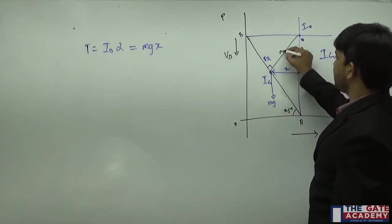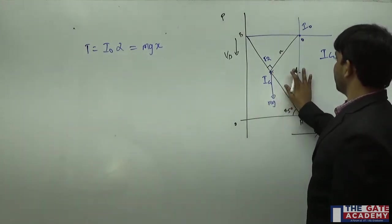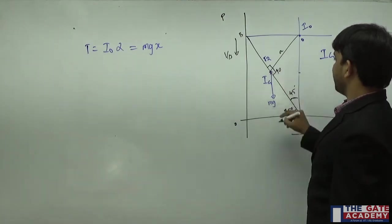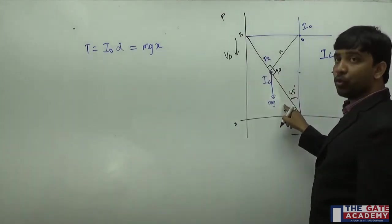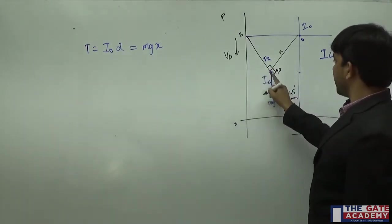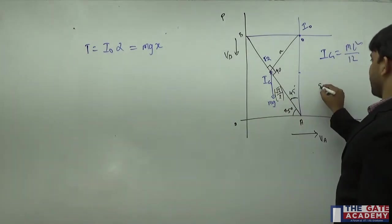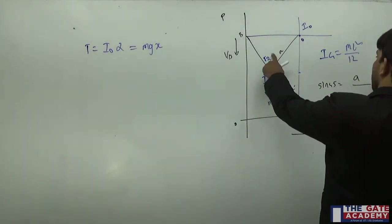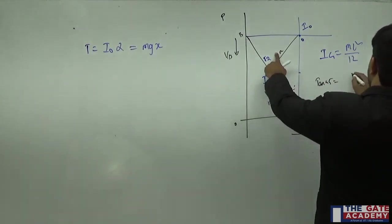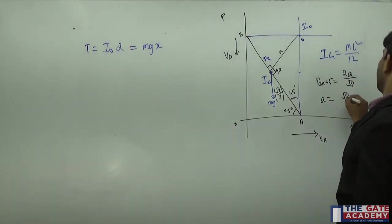The perpendicular distance between the two axes is called 'a'. With the angle as 45 degrees and the half-length as root 2 by 2, using tan 45 the value of a comes out to be root 2 by 2, which equals 1 by root 2. So I can write: I₀ = Ig + m·a² = mL²/12 + m·(1/√2)² = mL²/12 + m/2.